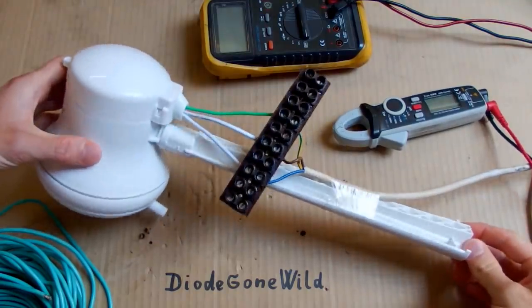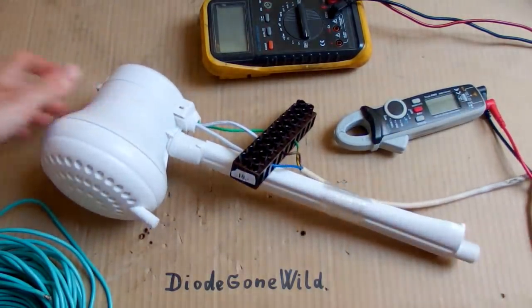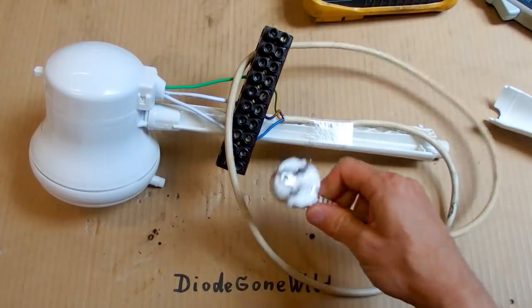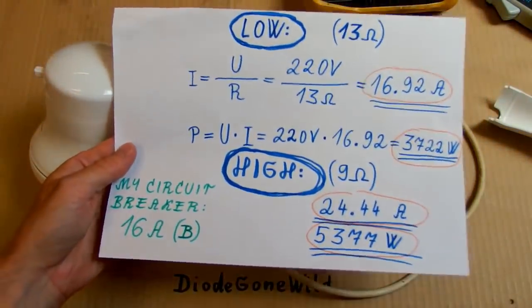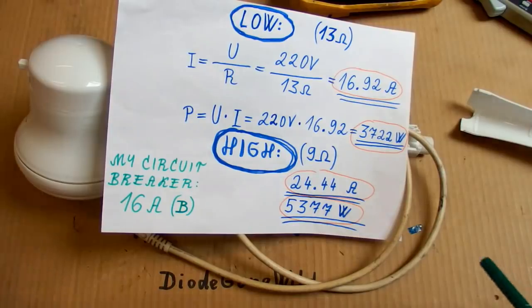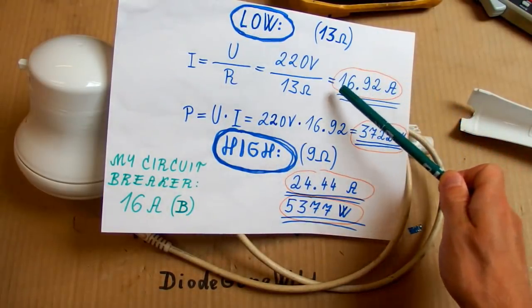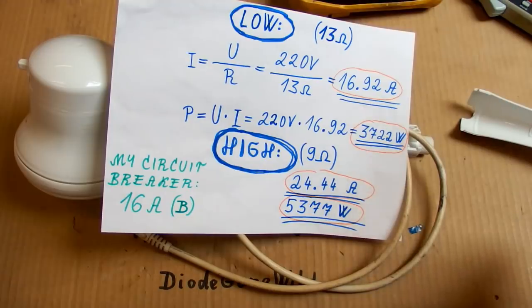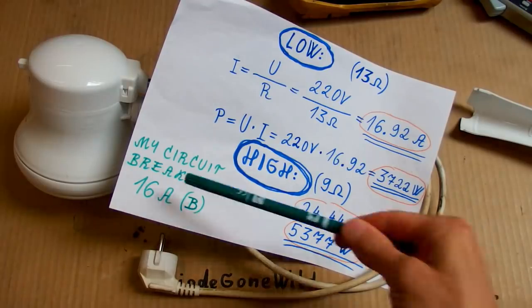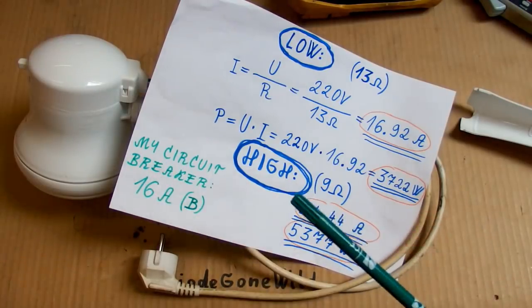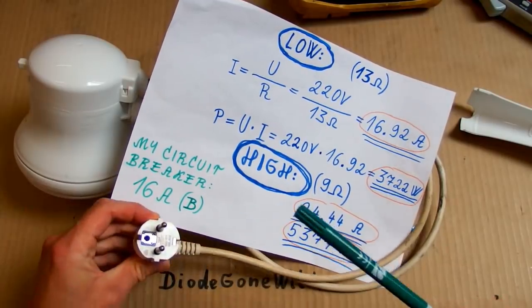And now I'm going to actually test it and do some measurements. I've connected a cable to it with a normal European plug and first I'm going to test it using a normal socket. I will set it to a low power setting which according to my calculations should draw about 16 or 17 amps. If I'm lucky my circuit breaker may not trip. My wall sockets have a 16 amp breaker.